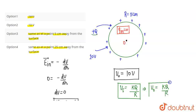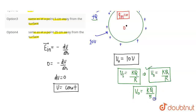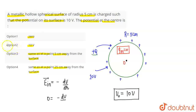For a hollow spherical conductor, the potential at the surface equals the potential at the center. Putting in the values: V₀ = KQ/R with radius 5 cm, the potential at the center equals the potential at the surface. The answer is 10 volts.